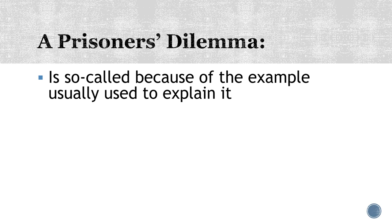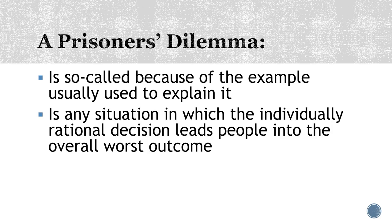This is called a prisoner's dilemma because of the example usually used to explain it: two prisoners, where if one turns on the other and provides evidence, they get a special deal and the other goes to prison for a long time. What happens is they both end up turning on each other and both go to prison for a long time — the worst overall outcome — because each is doing the individually rational thing. A prisoner's dilemma is any situation where the individually rational decision leads people to the overall worst outcome.